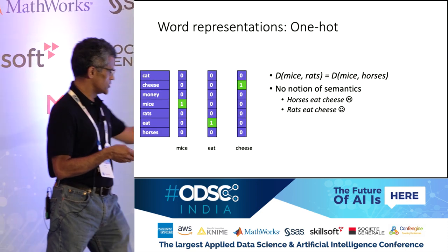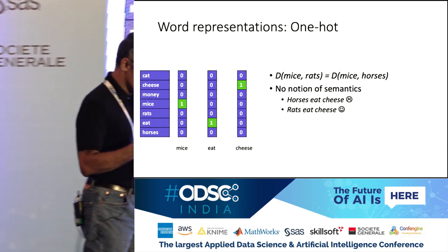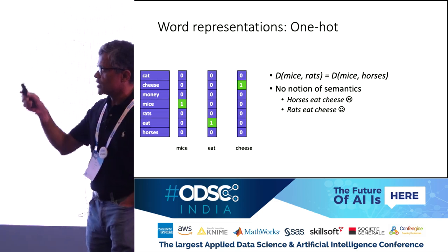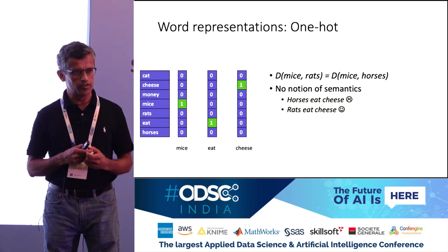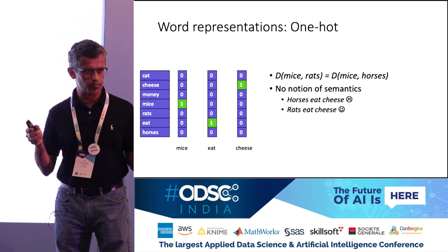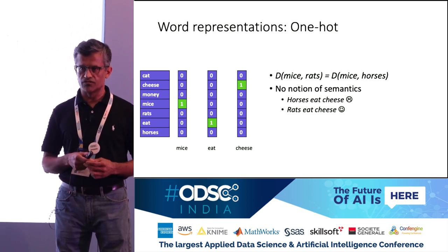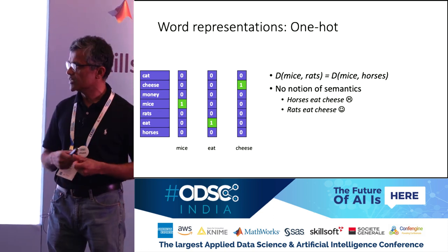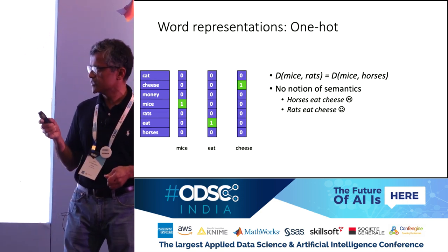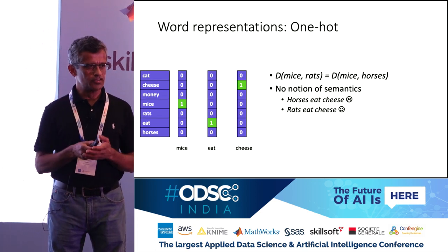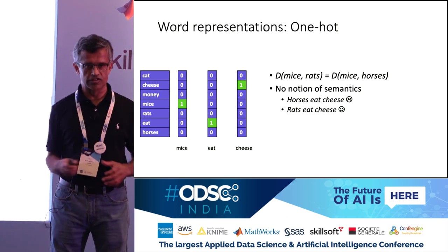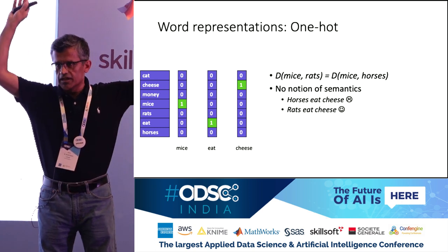Here we have three words: mice, eat, and cheese. One way to represent words is called a one-hot encoding representation, where each component of these vectors corresponds to a vocabulary item. So if I have a vocabulary of a thousand words, each component corresponds to a specific word. In this example, my vocabulary contains seven words: cat, cheese, money, mice, rats, eat, and horses. This neural network will not be able to do anything with any word outside this vocabulary. We represent each word by putting a one in the position corresponding to that word and a zero everywhere else.